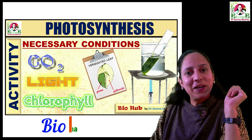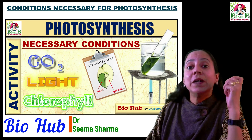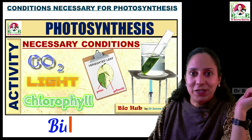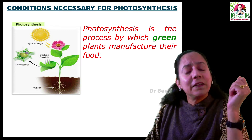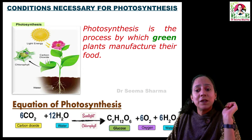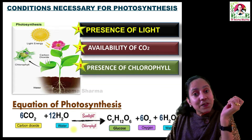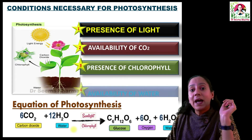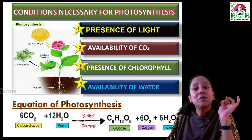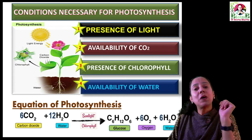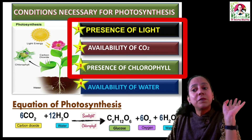Hi guys, you're watching my YouTube channel BioHub and I'm your facilitator Dr. Seema Sharma. In this video you will get to know about verification of conditions necessary for photosynthesis. Photosynthesis is the process by which green plants manufacture their food. This process requires: presence of light, availability of carbon dioxide, presence of chlorophyll, and availability of water. These are the four conditions necessary for photosynthesis, and in this video I have covered the complete procedural detail of carrying out verification of the first three conditions.